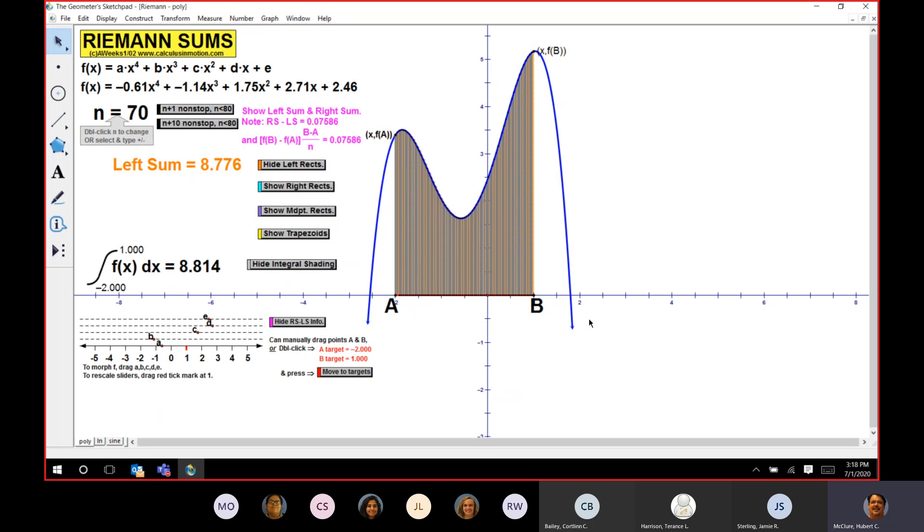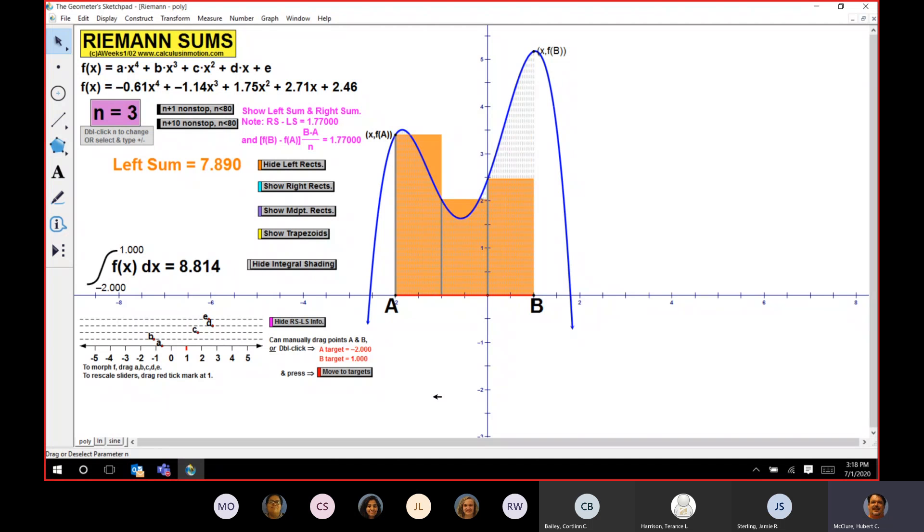So when you're talking about area under a curve, let's say that you want to find the area under a curve and you want to start off with three. Okay. And you want to go from like that negative two to positive two or negative. What is that? That's a negative two. That would be a one. From negative two to one, I want to find this area.